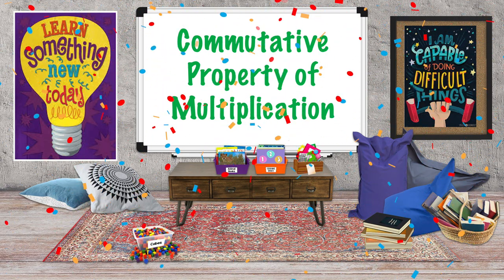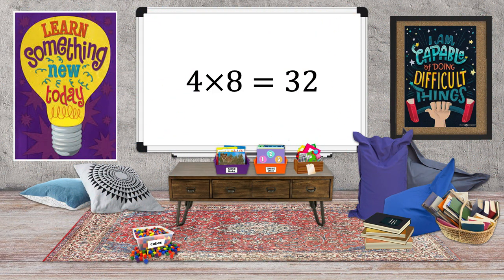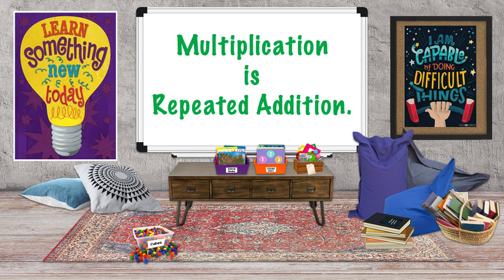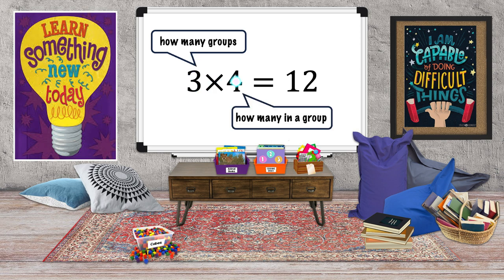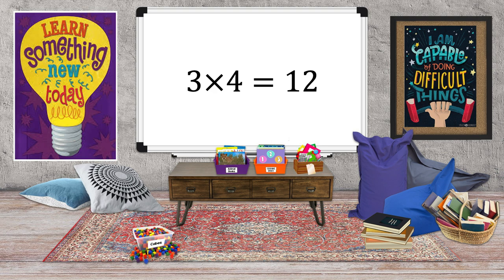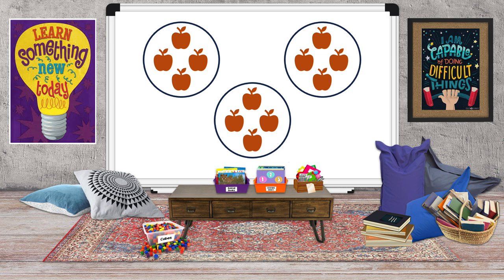First, let's review the numbers in a multiplication sentence. The numbers we multiply together are the factors; the answer is the product. Multiplication is repeated addition. For example, look at this multiplication sentence: three times four equals twelve. The first factor tells us how many groups — three groups. The second factor tells us how many are in a group.